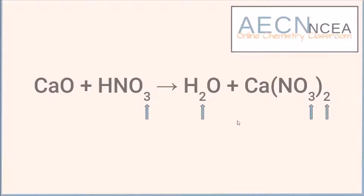When we are balancing chemical equations it's not like writing ionic formulae. We can't use subscripts — those small numbers — to add more or take away atoms from the ionic compound. Once you've written the ionic formula, that is it; the ionic compound is fixed. Instead, if we want to balance it we have to write numbers in front of the ionic formula.